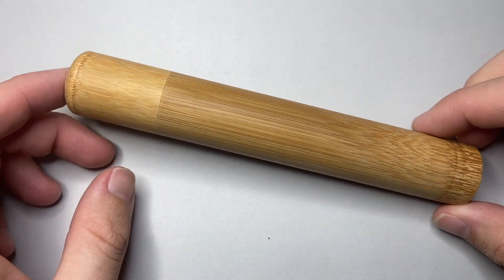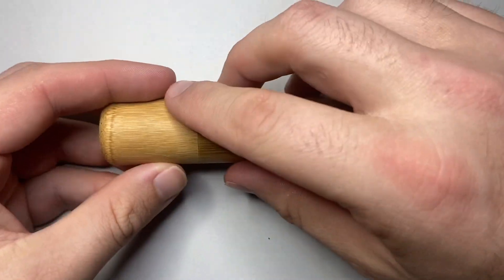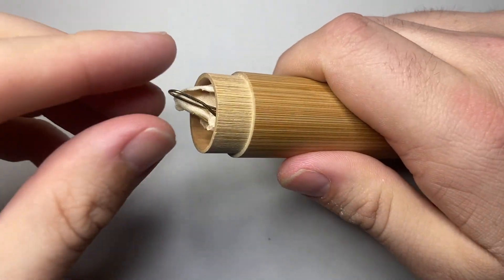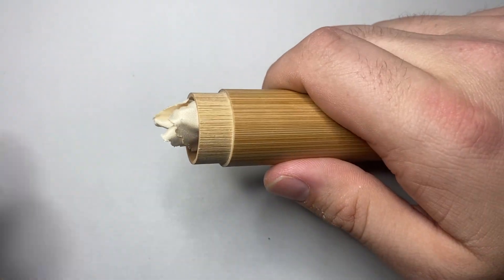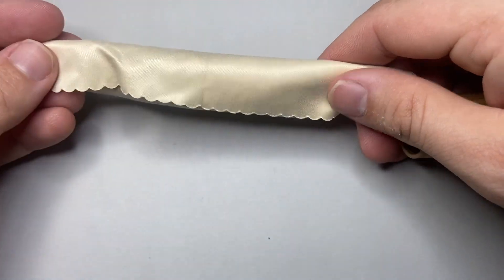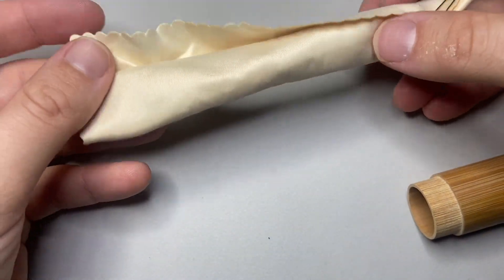It comes packaged in this beautiful bamboo tube. Take the cap off and inside you get a polishing cloth that the pen comes wrapped in. I've taken it out since I've been using it, but it's nice that it comes with this.